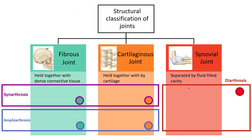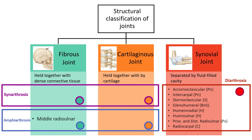Summarizing the appendicular skeleton articulations: there is one fibrous joint — the middle radial-ulnar joint as a fibrous syndesmosis, functionally amphiarthrotic. Everything else is synovial, with a wide variety of types: synovial planes, synovial saddle, synovial ball and socket, synovial hinge, synovial pivot, and synovial condylar — all functionally diarthrotic.